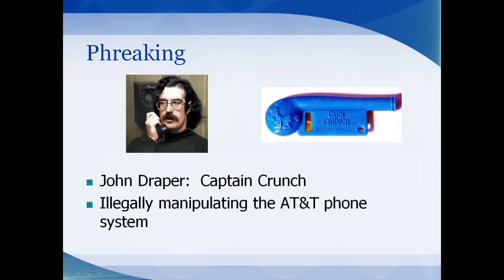Hacking has been around even before there were computers. It started with a term called phreaking. There's a gentleman by the name of John Draper who found that he could get a Captain Crunch whistle — found in Captain Crunch cereal — and if he blew that whistle into a phone it would activate the phone as if it were a long-distance phone call, getting him many long-distance calls for free. He even built a machine that could produce several different tones to basically control the phone line. So phreaking is illegally manipulating the phone systems, which is the first source of our hacking.